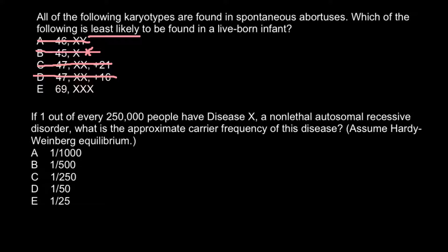This condition can be tolerated in plants — for example, we can find many plants that are triploid. This is not a trisomy. Trisomy is when one extra chromosome is present in a diploid organism. As we saw, trisomy 21 and trisomy 16 each add just one extra chromosome. But here we have a whole extra set of chromosomes, so we call this triploidy rather than trisomy.